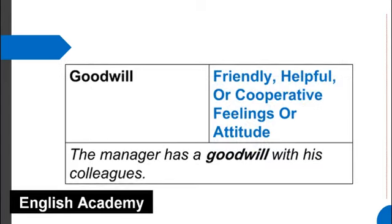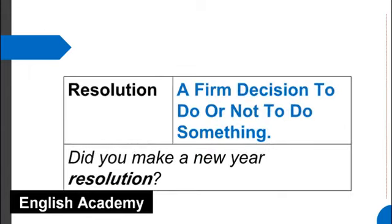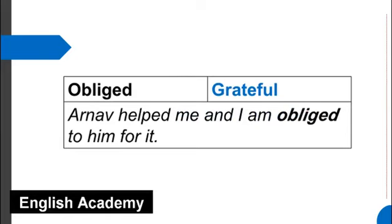Goodwill means friendly, helpful, or cooperative feelings or attitude. Example sentence: The manager has goodwill with his colleagues. Resolution means a firm decision to do or not to do something. Example sentence: Did you make a new year resolution? Obliged means grateful. Example sentence: Arnav helped me and I am obliged to him for it.